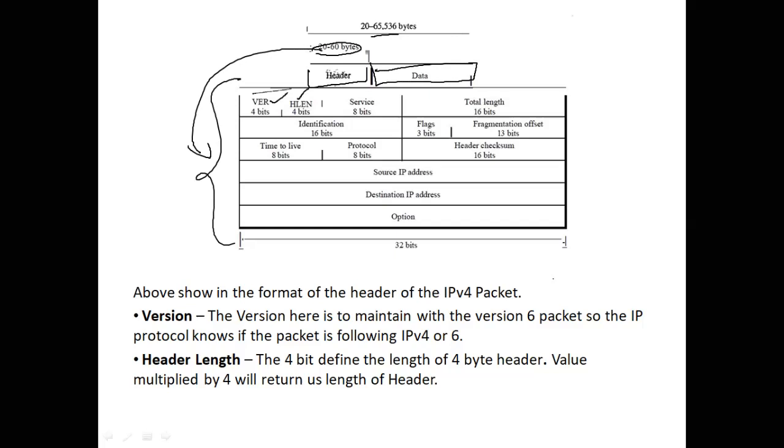This is the version, this is header length, services, total length, identification, flags, fragmentation offset, time to live protocol, header checksum, source IP address, destination address, and of the options. All of these things are what make the IP protocol work.